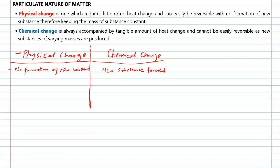Physical changes require little or no heat to proceed. But in the case of chemical change, a tangible amount of heat is required. Physical change can easily be reversed since there is no formation of a new substance, while chemical changes are not easy to reverse.